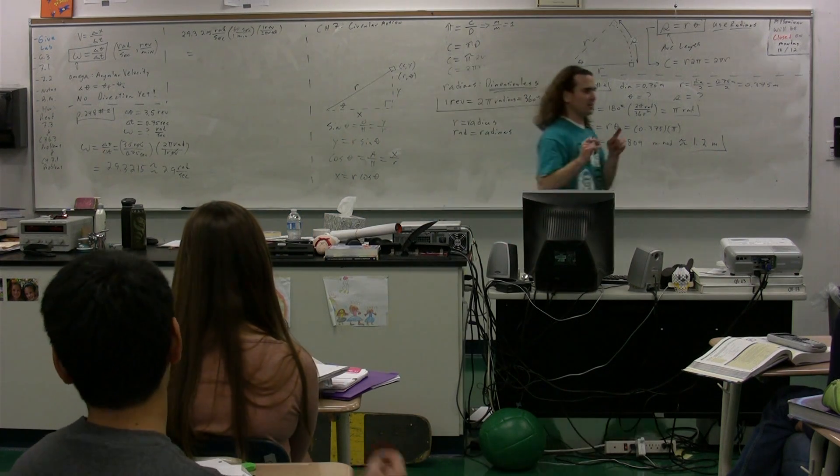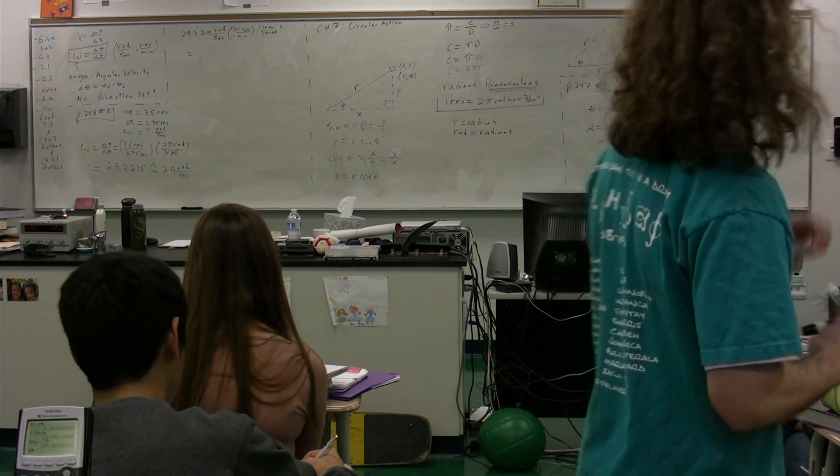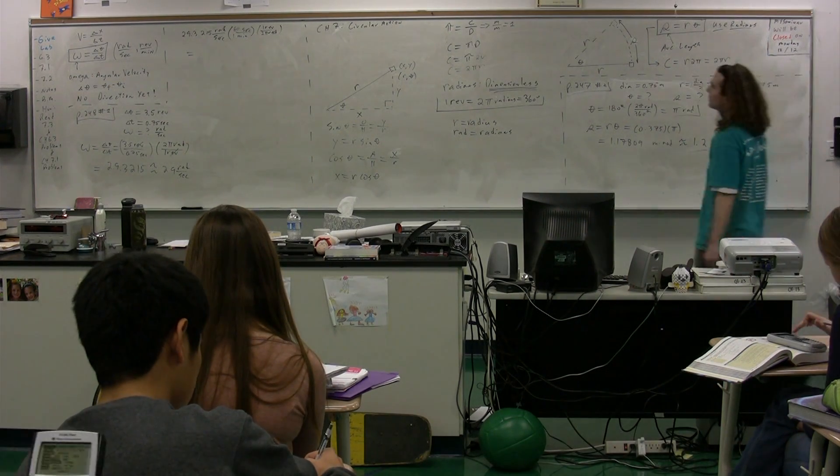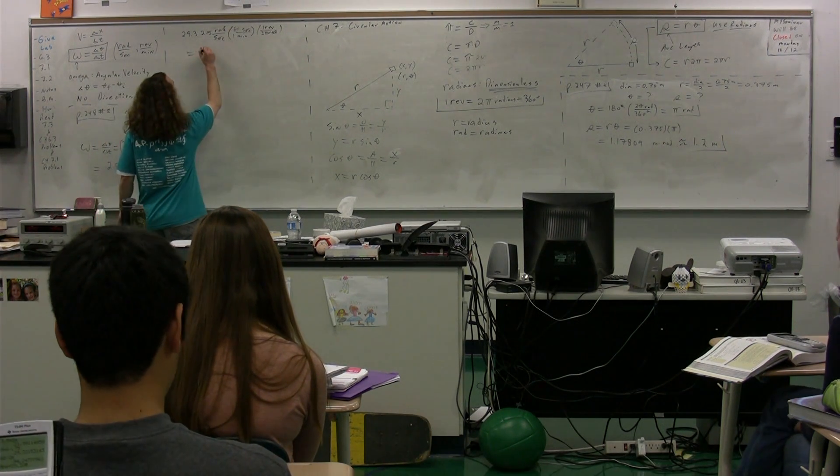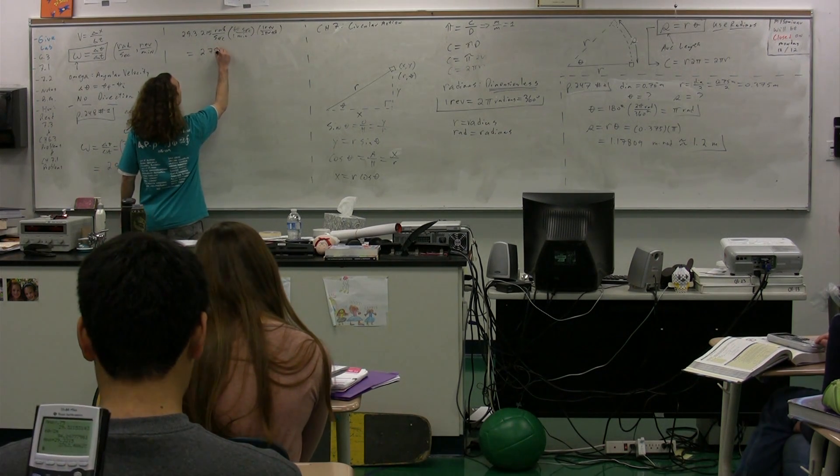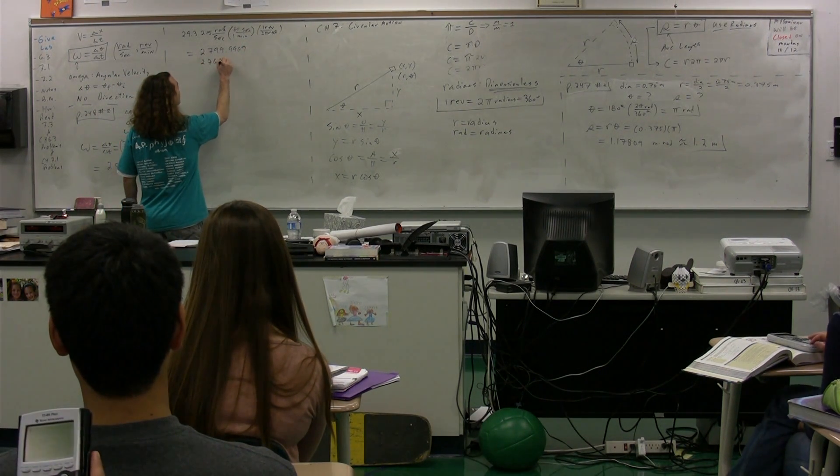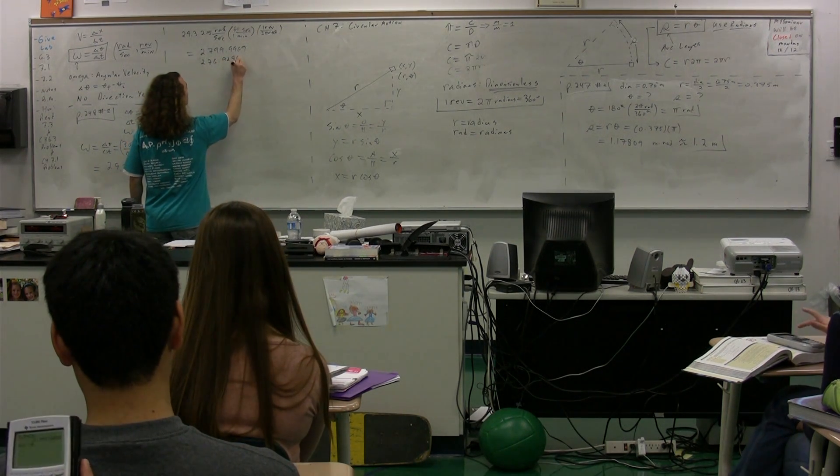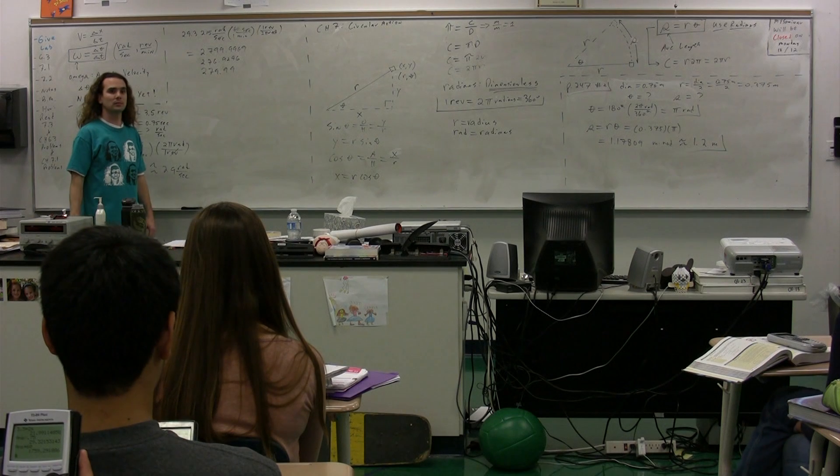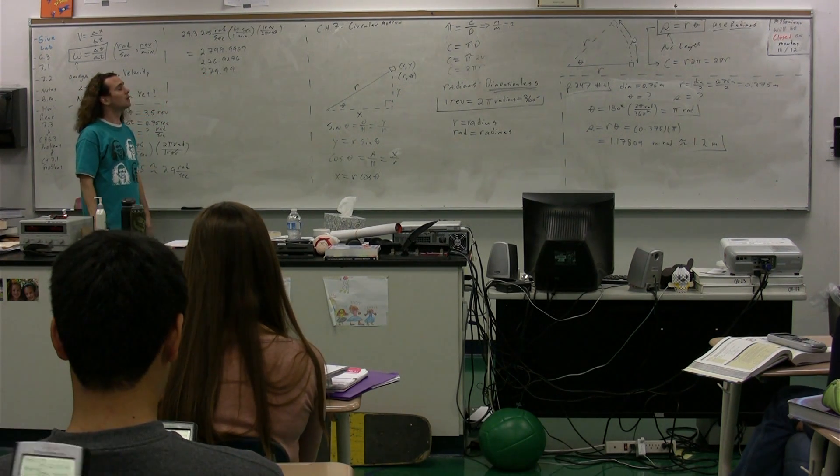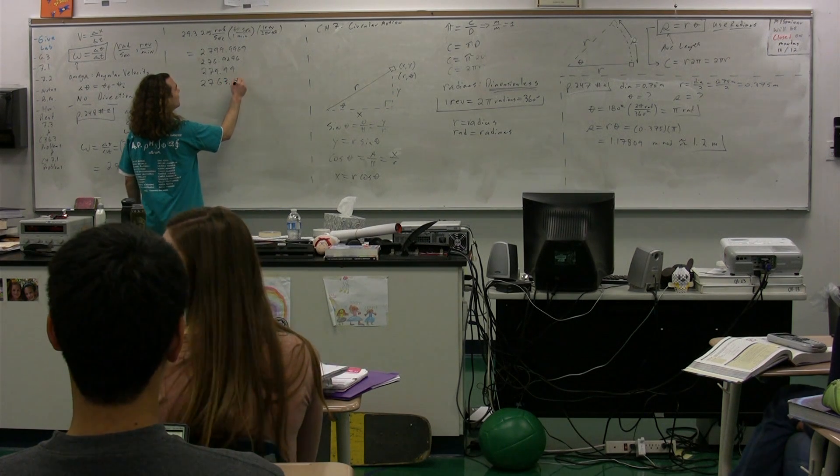Please get out your calculator and plug this in, because some of you will get it wrong. Students call out various answers: 2000, 99.996, 236.92, 276.92, 279.96, 2763. Depends on how many sig figs you get, whether you're going to get 279.99 or 280.